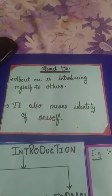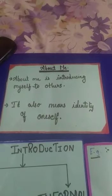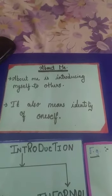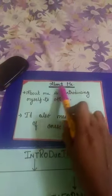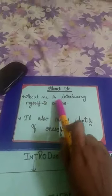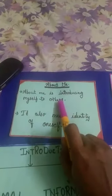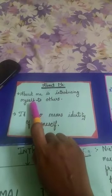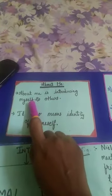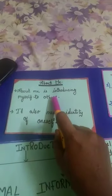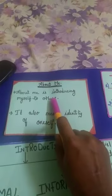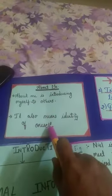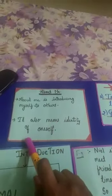Good morning everyone. Today I am going to teach you EVA subject and my topic is about me. What is about me? About me is introducing myself to others — introducing yourself to others. That is self-introduction. You have to introduce yourself to others. It also means identity of oneself.